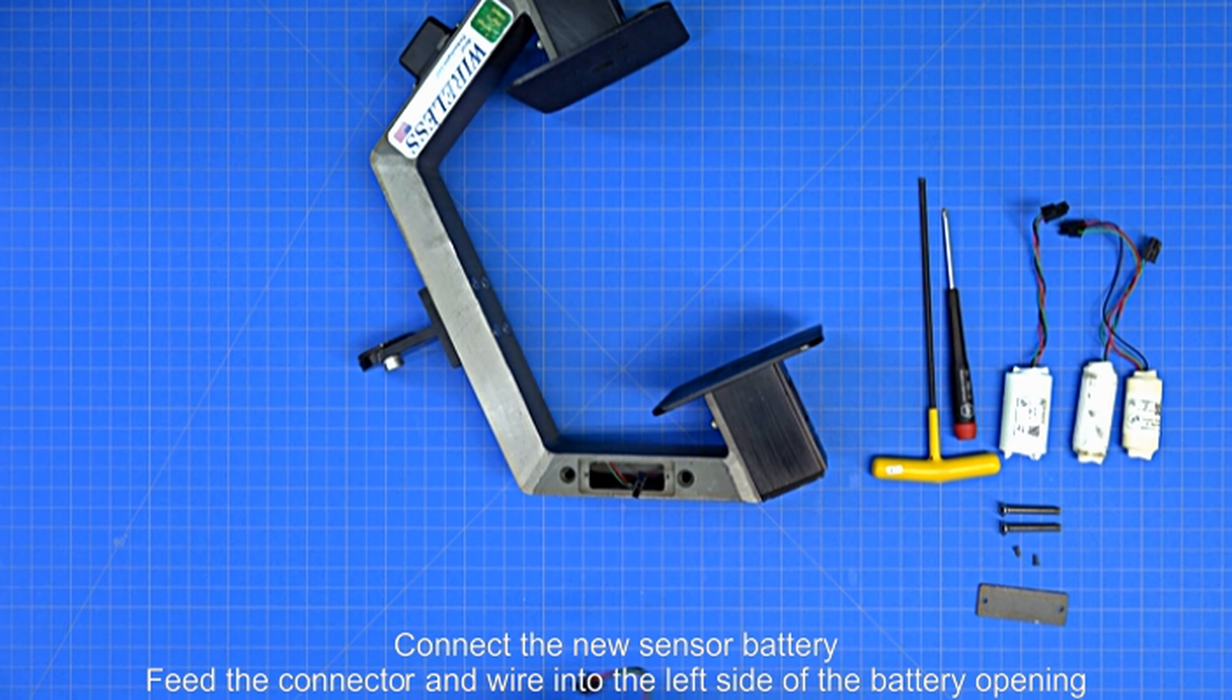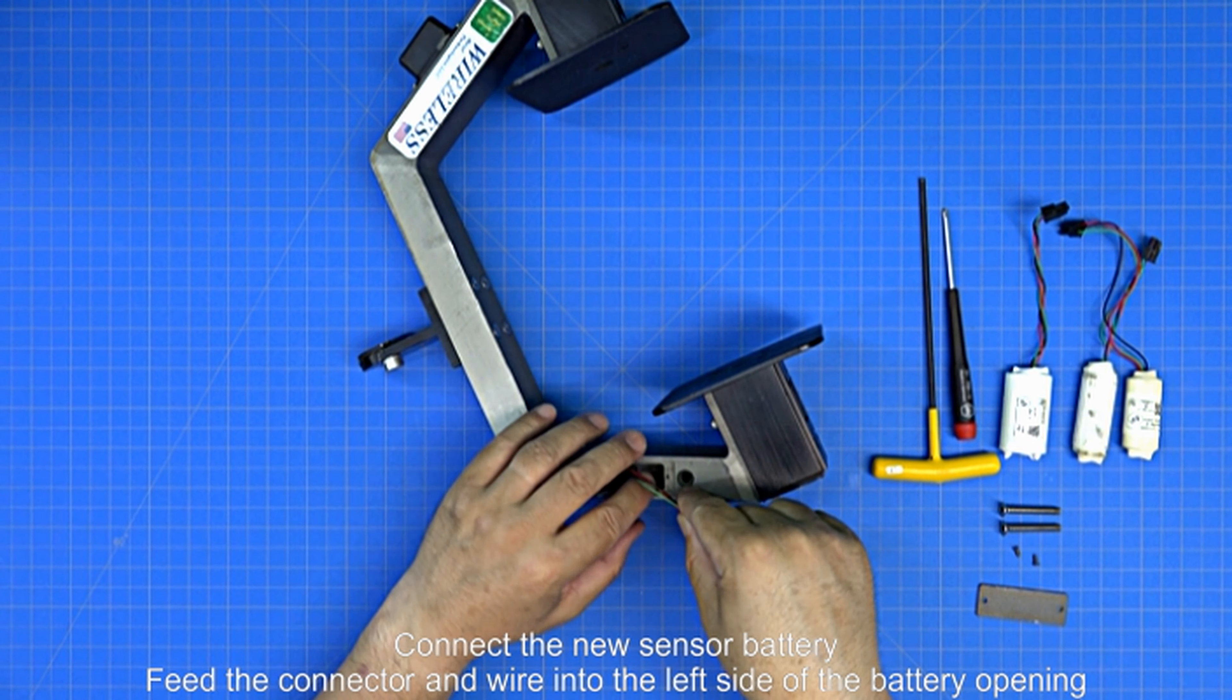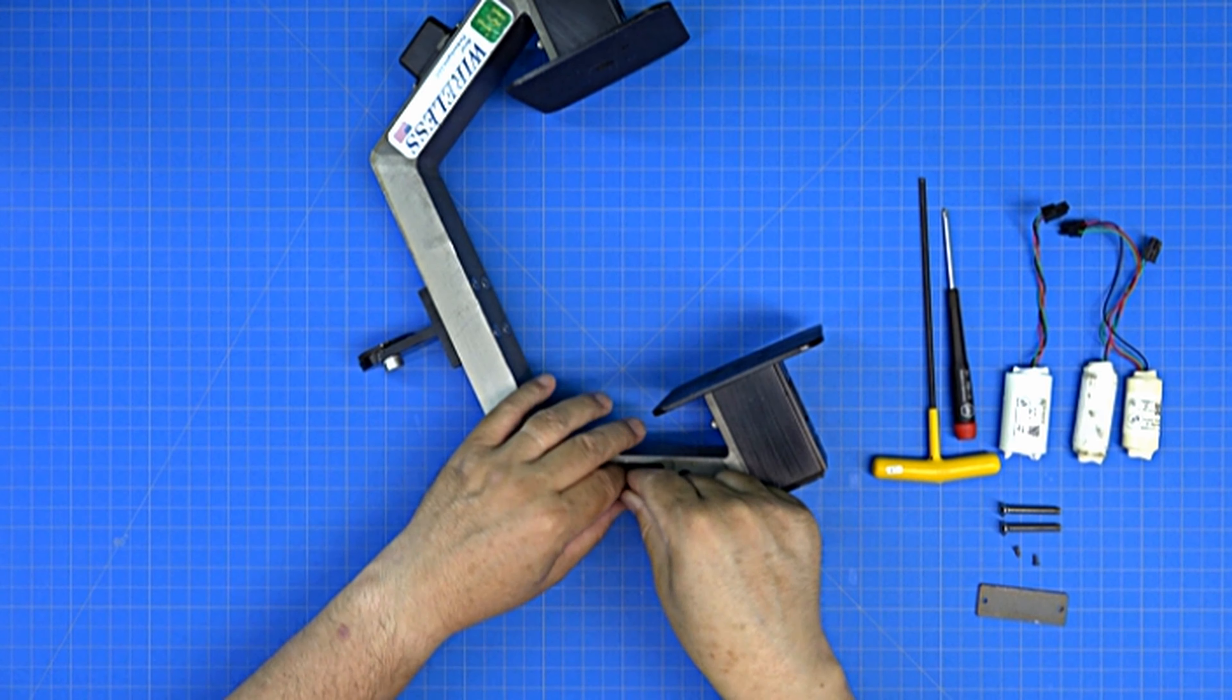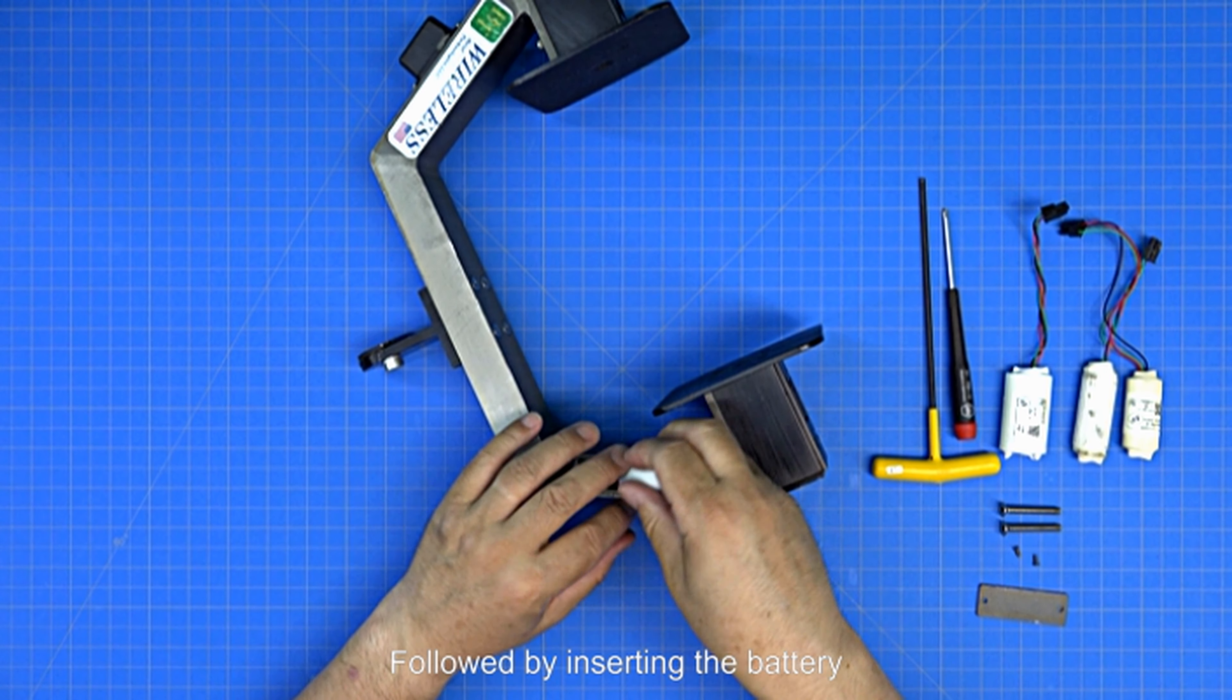Connect the new sensor battery. Feed the connector and wire into the left side of the battery opening, followed by inserting the battery.